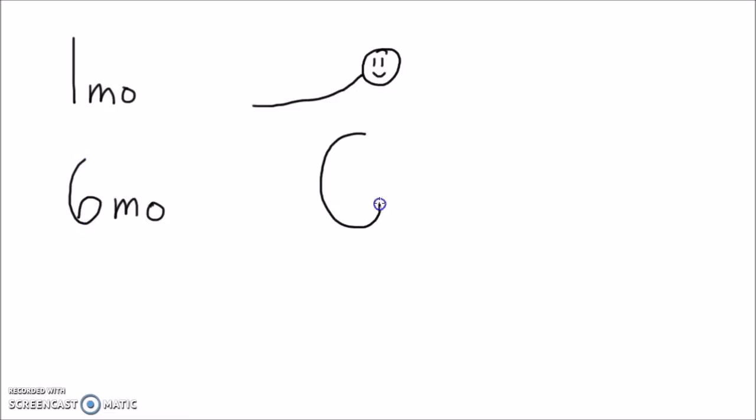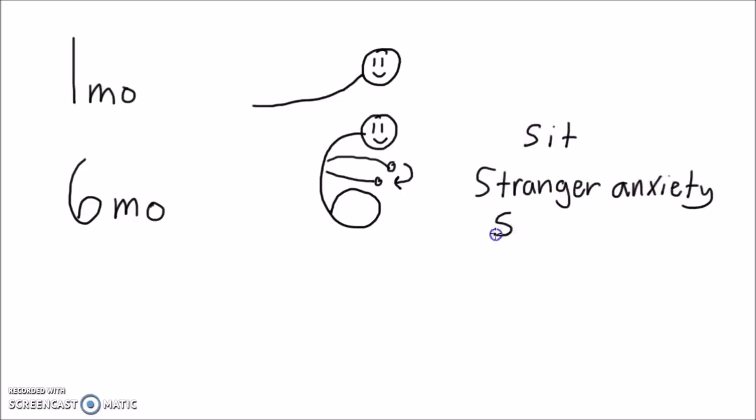At six months the infant should be following the S rule: Sitting, stranger anxiety, and switching hands which means it should be passing a toy from one hand to the other.